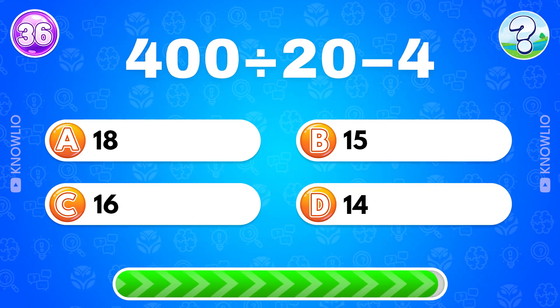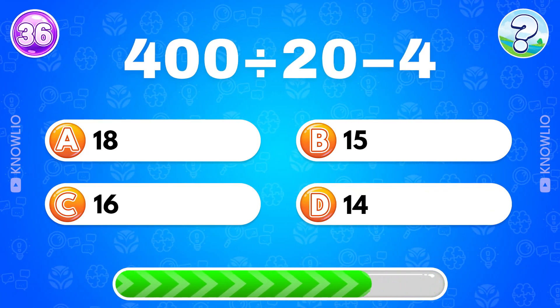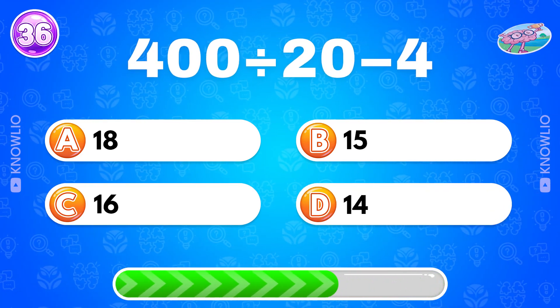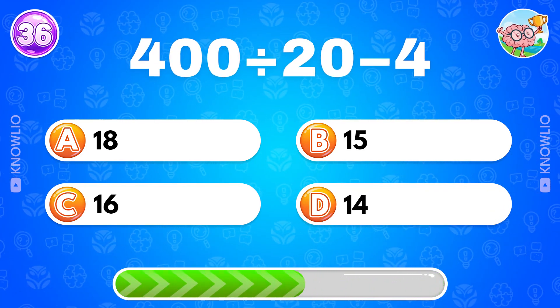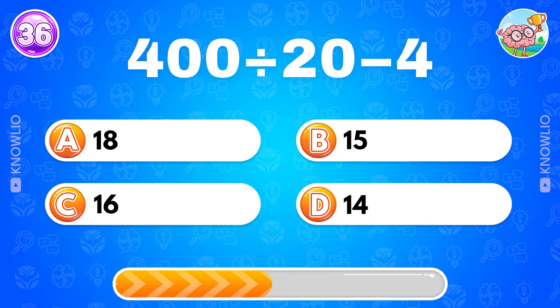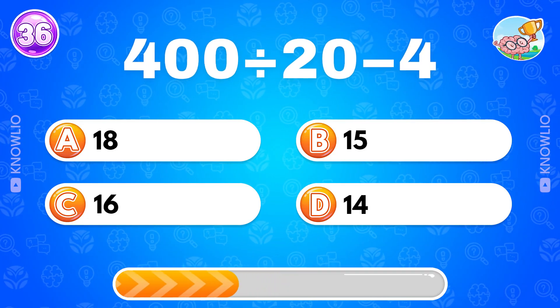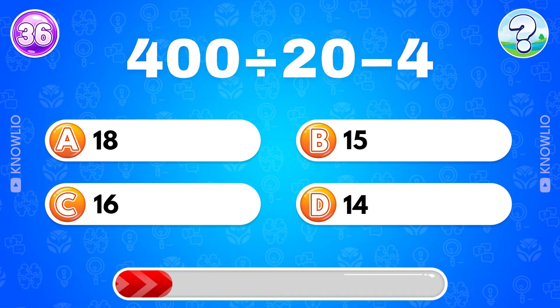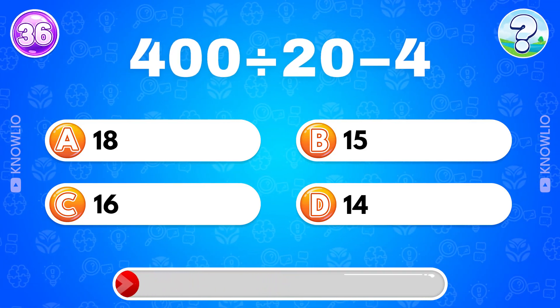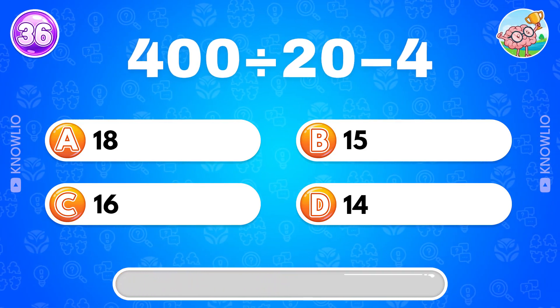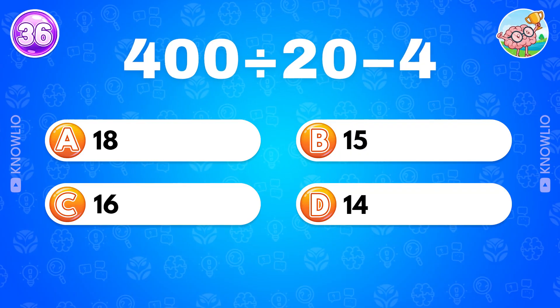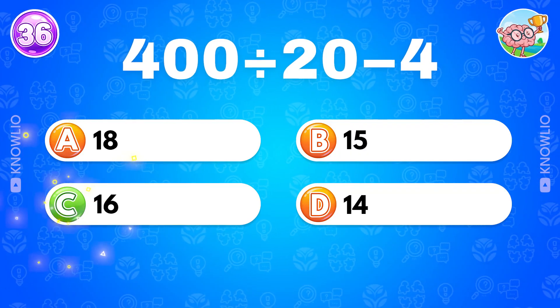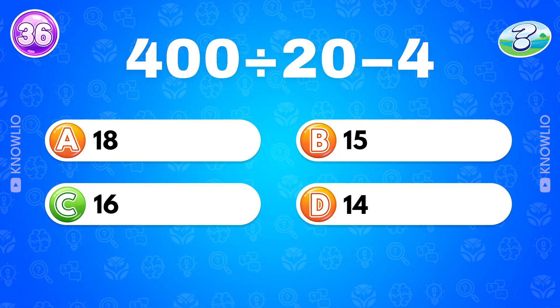400 divided by 20 minus 4? Answer C: 16.